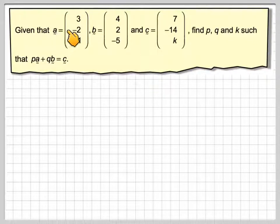Given that vector a is (3, -2, -1), and vector b is (4, 2, -5), and c is (7, -14, k), find p, q and k such that p times vector a plus q times vector b equals vector c.